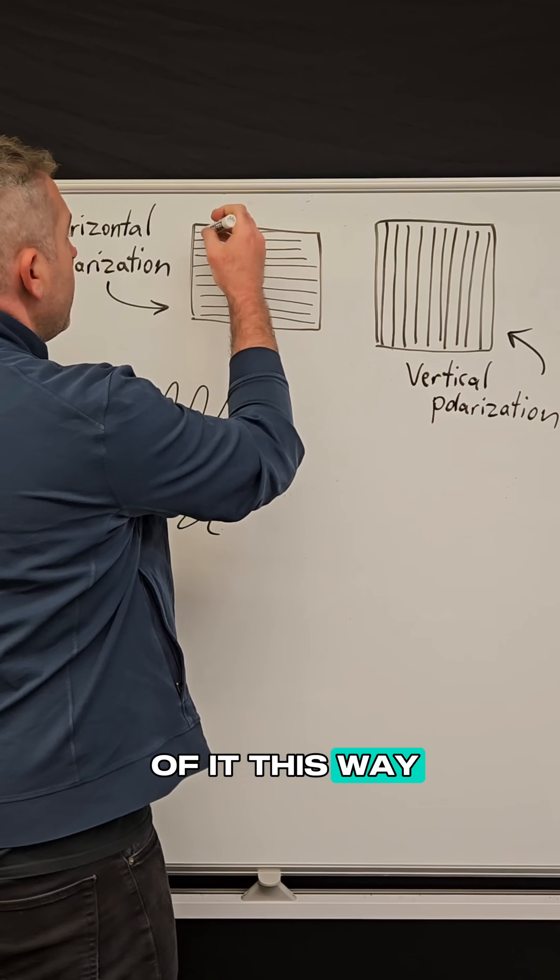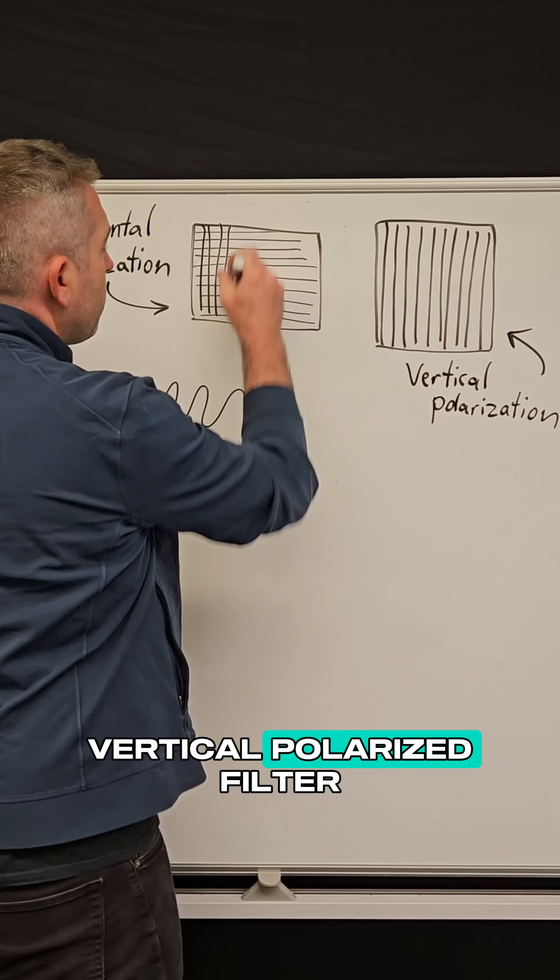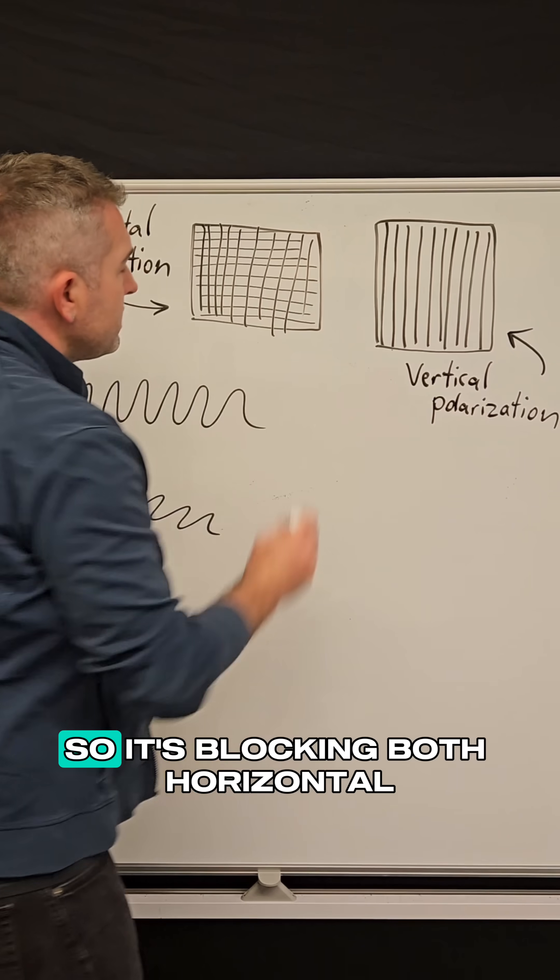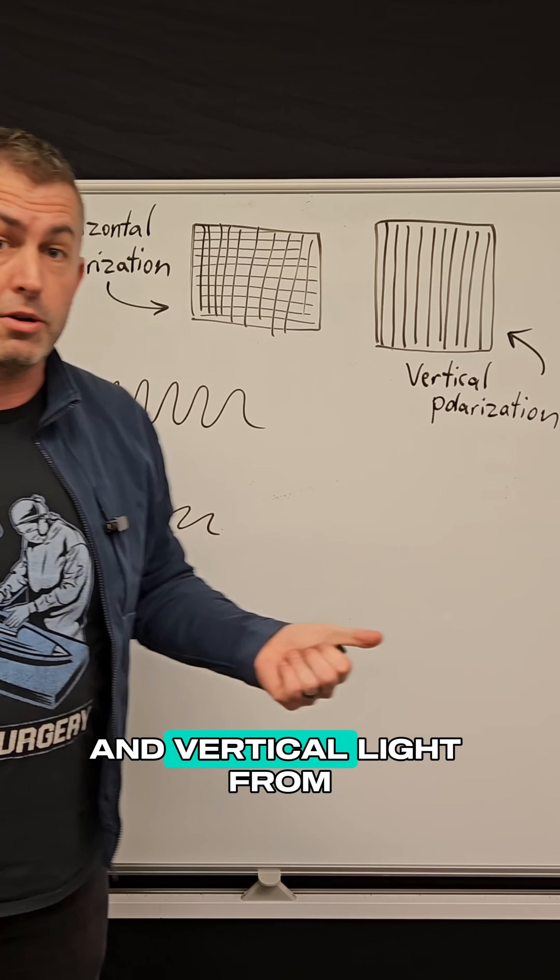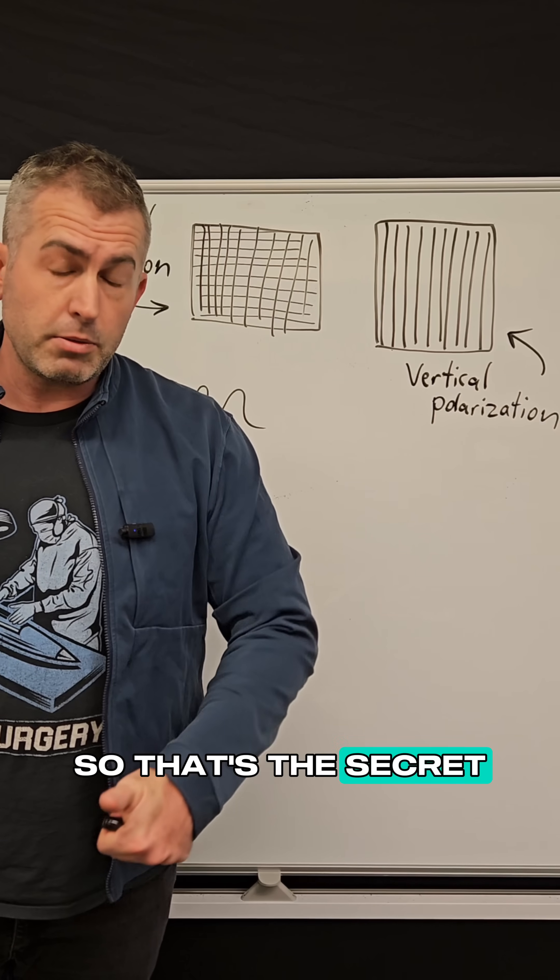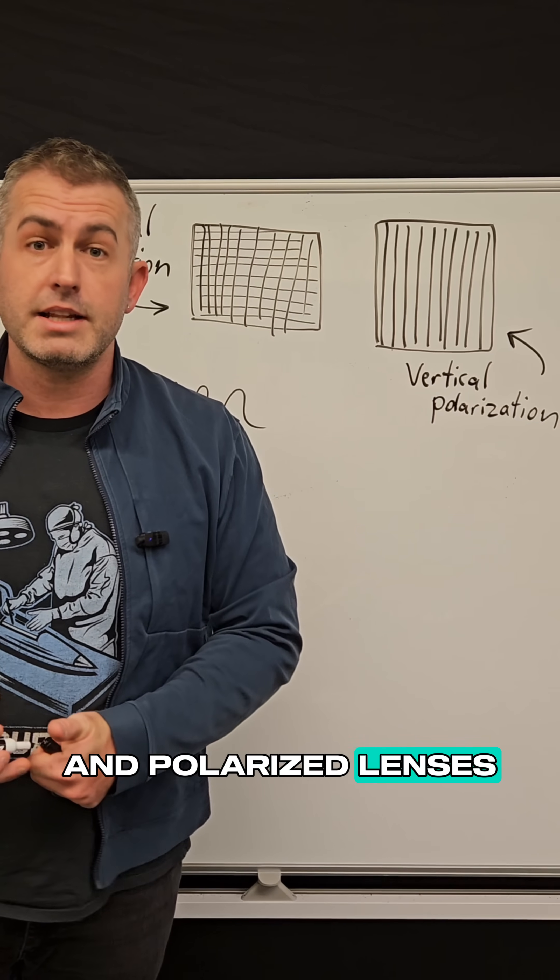And you can think of it this way: I now have a vertical polarized filter stacked on top of a horizontal, so it's blocking both horizontal and vertical light from getting through. So that's the secret behind sunglasses and polarized lenses.